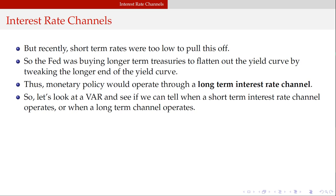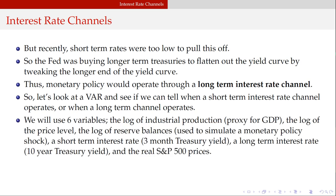To identify whether short-term or long-term interest rate channels were operating, I used a vector autoregression with six variables. First, the log of industrial production as a proxy for GDP — industrial production is an index reported monthly, whereas GDP is reported quarterly, so we get higher frequency, more observations, more data, which is always better.